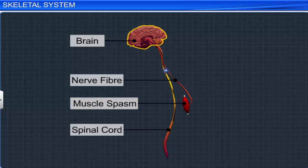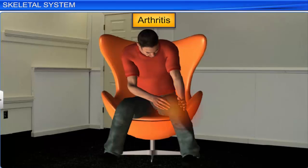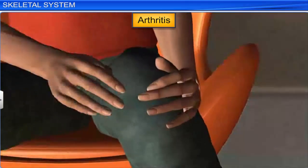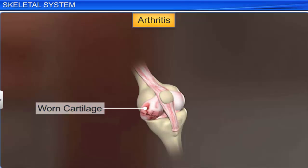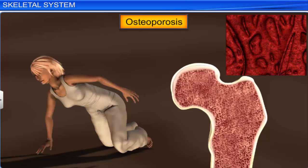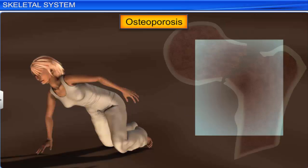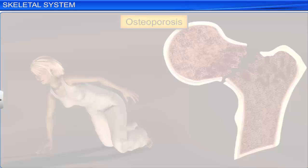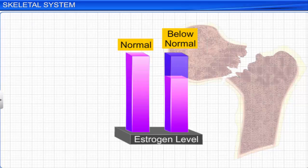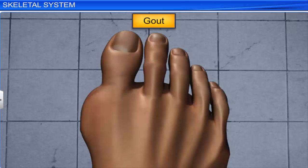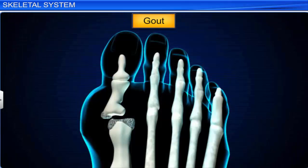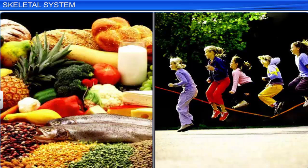Arthritis is the inflammation of joints, a disorder commonly seen in elderly people. Elderly people also suffer from osteoporosis, which is characterized by a decrease in bone mass, which increases the chances of fractures. It is caused by a decrease in the level of estrogen and is therefore more common in women. Gout is another disorder which results in the inflammation of joints due to the accumulation of uric acid crystals. It is essential to observe a healthy diet and lifestyle so that the skeletal and muscular systems can function efficiently.